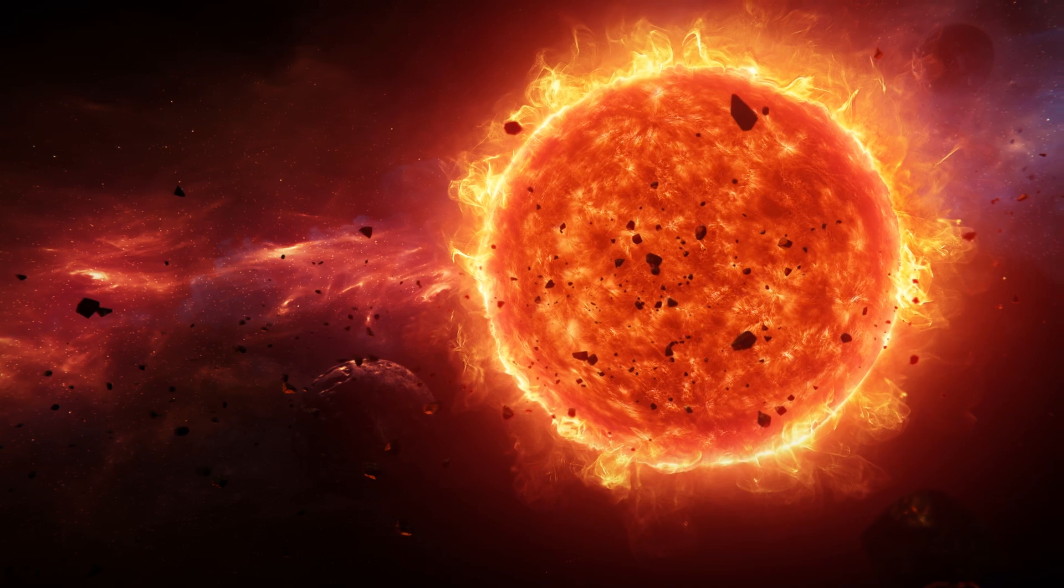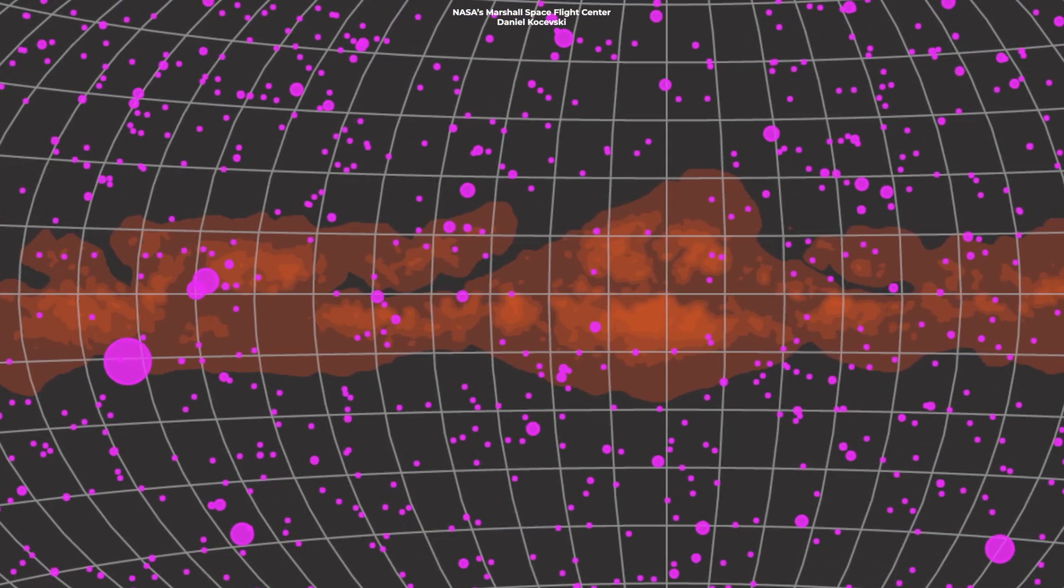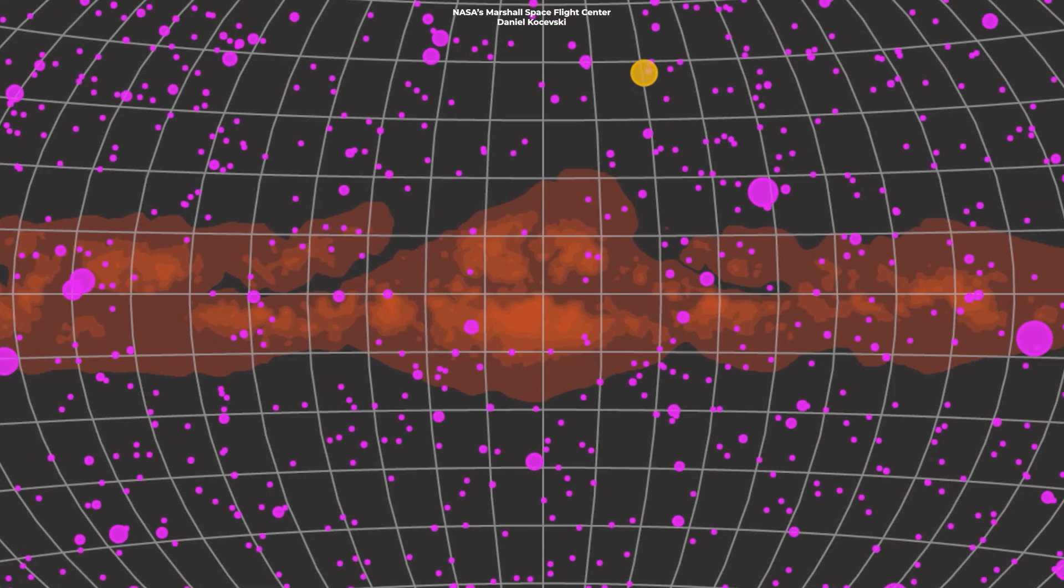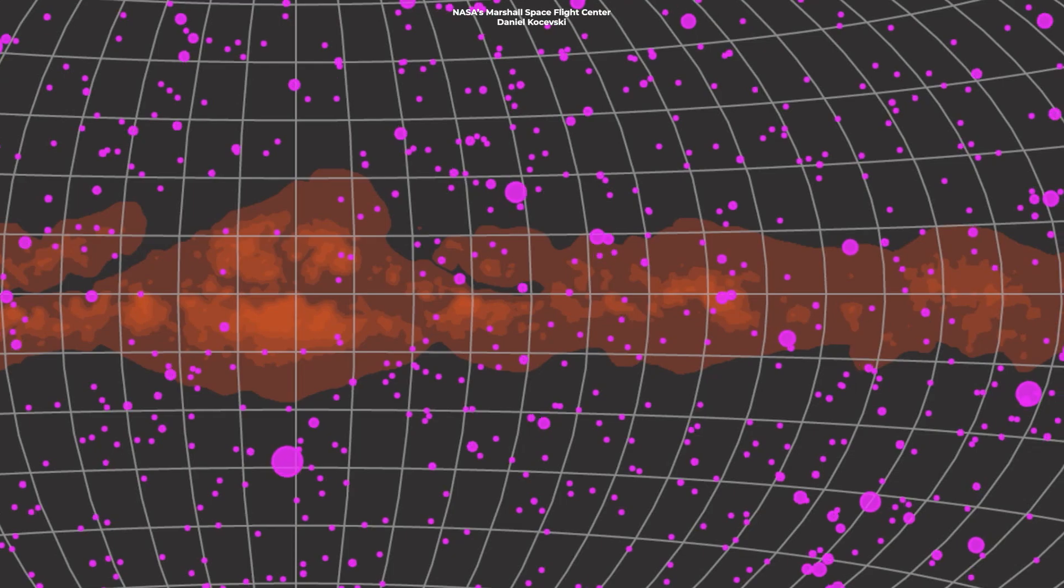You might think the sun is pretty powerful, and you're right. But when it comes to cosmic fireworks, the sun is just a little sparkler compared to the raging infernos of gamma-ray bursts, or GRBs for short. These bad boys pack more punch than a heavyweight champion on steroids, and they've got a mean left hook.